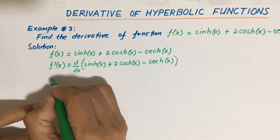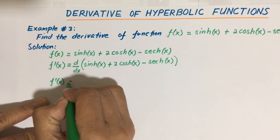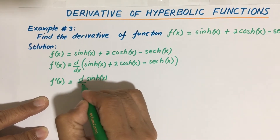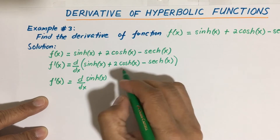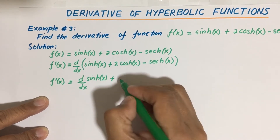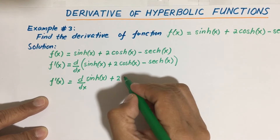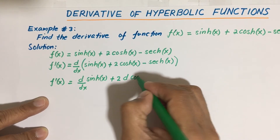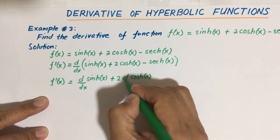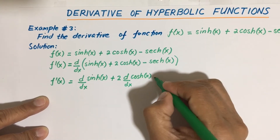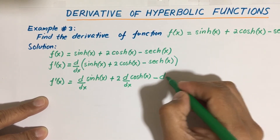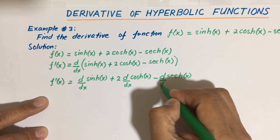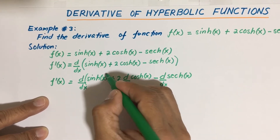We can write f prime of x as: the derivative of hyperbolic sine of x with respect to x, plus the constant 2 outside times the derivative of hyperbolic cosine of x with respect to x, then minus the derivative of hyperbolic secant of x with respect to x. We are applying the sum and difference rule here.